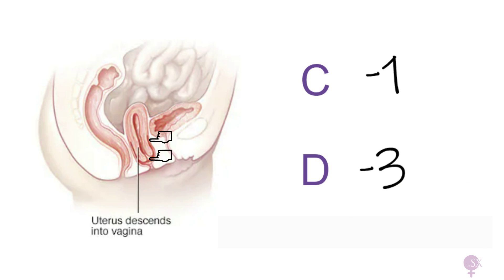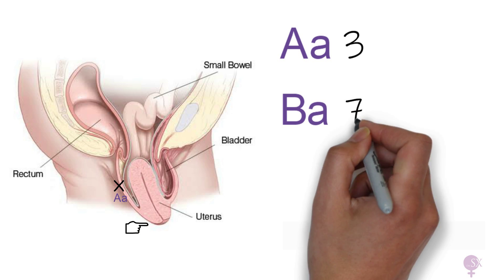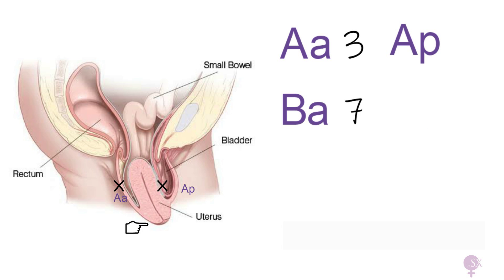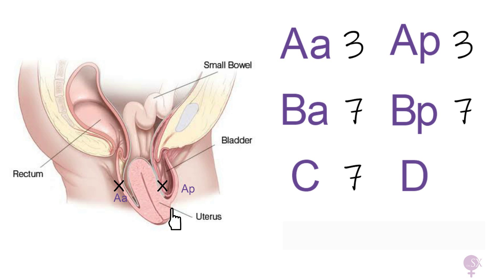Our final example is this: here we can see Aa at plus three, three centimeters below the hymen. We have Ba at seven, Ap at three, and Bp at seven. Next we have the cervix also at seven and D at five. Therefore, with all of these measurements beyond the hymen, this is representing a complete or stage four uterine prolapse, also referred to as a procidentia.